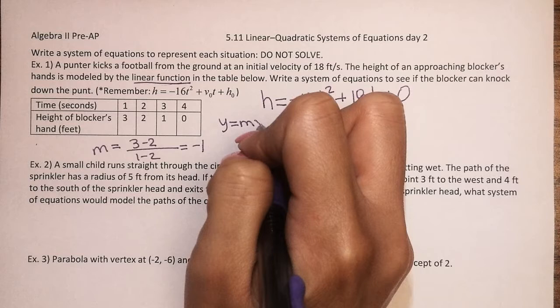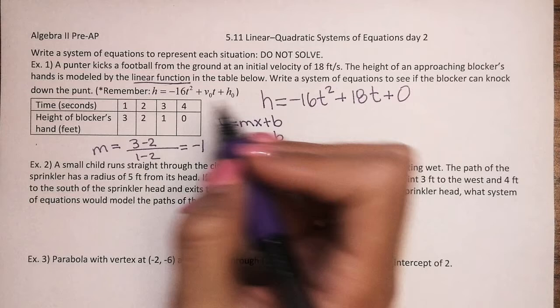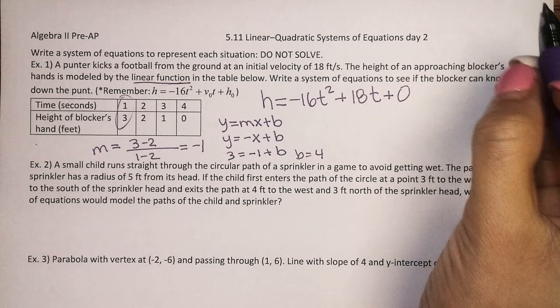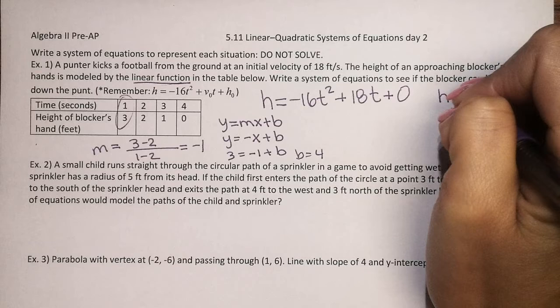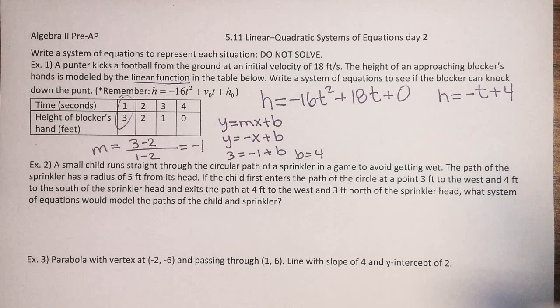And then we need to find our y-intercept, so you can do the y equals mx plus b equation. We just found the slope was negative 1, so y equals negative x plus b. To solve for our y-intercept, we would just have to plug in any given point here. We can just do the first one, 1 comma 3. So 3 equals negative 1 plus b. And once I solve for b, it's 4, so our y-intercept is 4. So for our second equation, we could also say h equals negative t plus 4. And that would be our system of equations that we would use to solve number 1. And we just have to set it up. We are not solving.